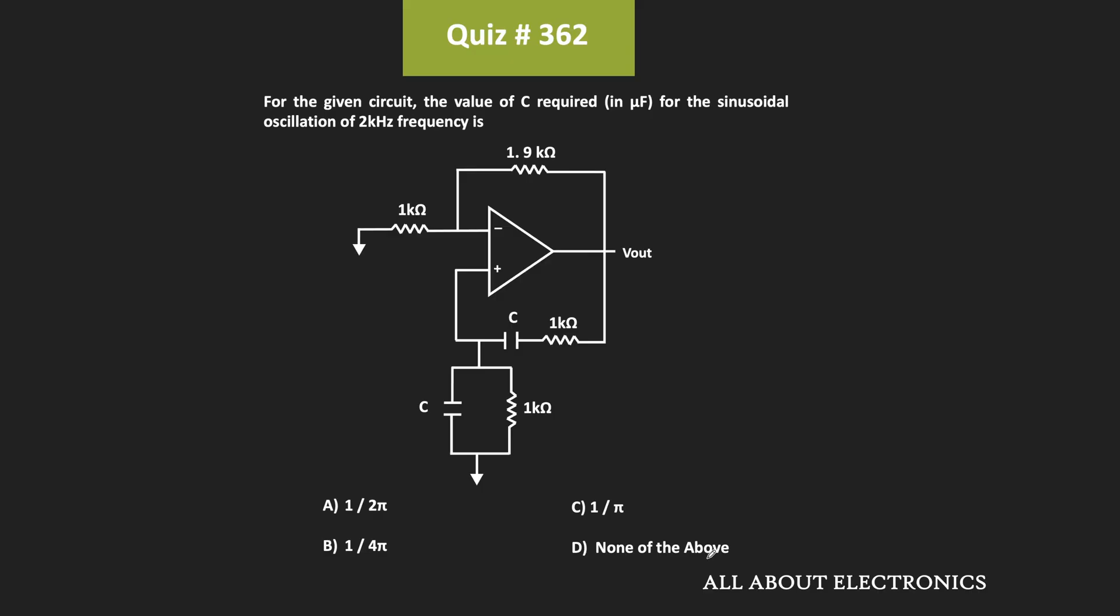Hey friends, welcome to the YouTube channel All About Electronics. In this question, we have been given this circuit and for the given circuit, we have been asked to find the required value of C for the sinusoidal oscillation of 2 kHz frequency.